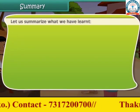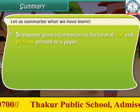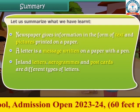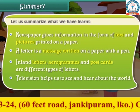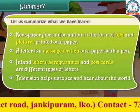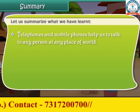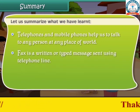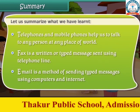Let us summarize what we have learned. Newspaper gives information in the form of text and pictures printed on paper. A letter is a message written on paper with a pen. Inland letters, aerogram and postcards are different types of letters. Television helps us to see and hear about world happenings. Telephones and mobile phones help us talk to any person at any place in the world. Email is a method of sending typed messages using computers and internet.